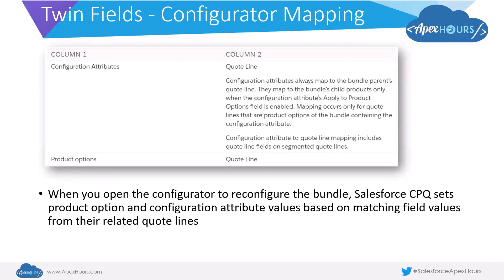Another aspect of twin fields is how it maps within the bundle configurator. Configuration attributes and product options map natively to quote line using twin fields. Also, when you open the configurator to reconfigure a bundle, Salesforce CPQ sets the product option and configuration attribute values based on the matching field values from the related quote lines — it pulls those values and sets them as well.